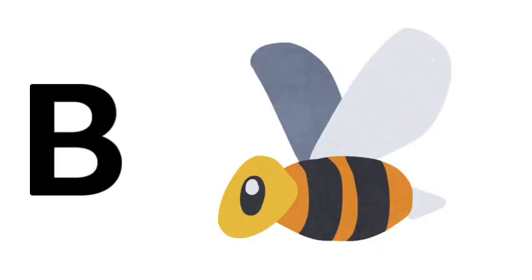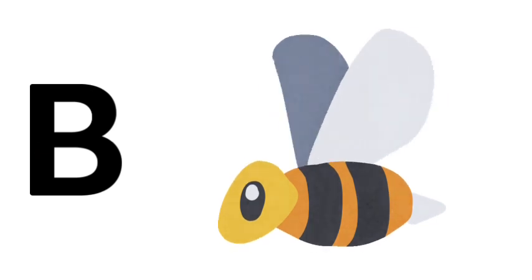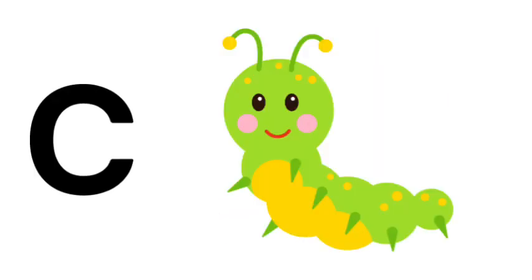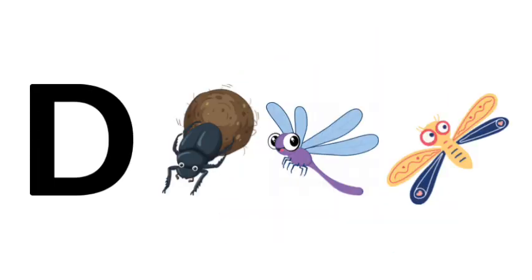A is for Ant, B is for Bee, C is for Caterpillar, D is for Dung Beetle, Dragonfly.